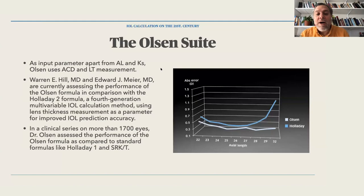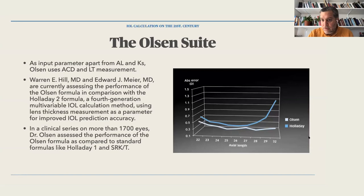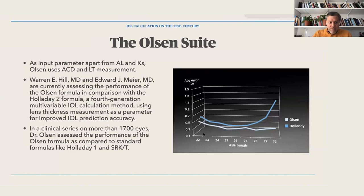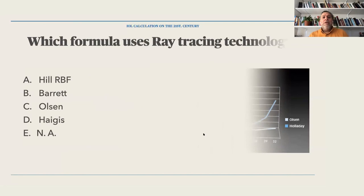Lens thickness measurements are important because in cataract surgery you're not removing the entire lens — just the cortex and nucleus — leaving the capsular bag intact. If you don't measure lens thickness, you can't correctly estimate the effective lens position, leading to calculation errors. Dr. Hill and Dr. Meyer are assessing the performance of the Olsen formula compared to Holladay 2. In a clinical series of more than 1,700 eyes, Dr. Olsen assessed his formula against standard formulas like Holladay and SRKT.